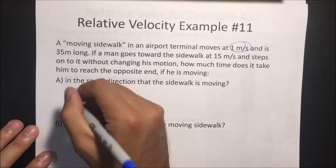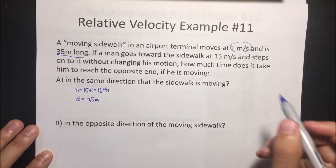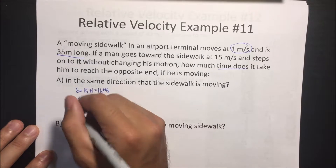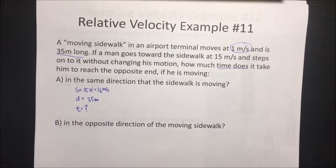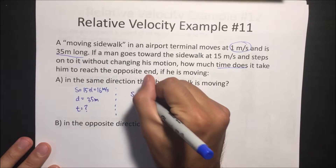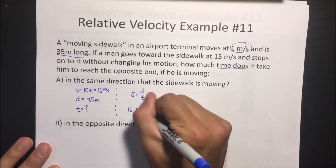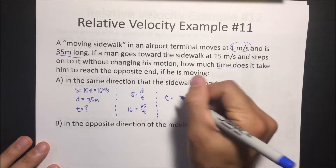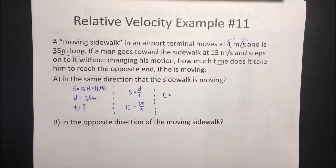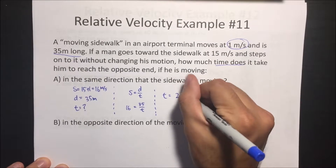The distance he's going to be traveling is 35 meters, and we want to know how much time it takes. Using the formula speed equals distance divided by time, speed is 16 meters per second and distance is 35 meters. So 35 divided by 16 is equal to 2.19 seconds.